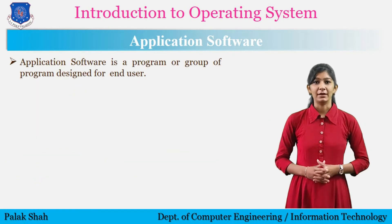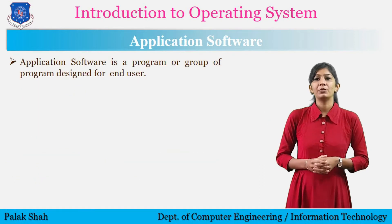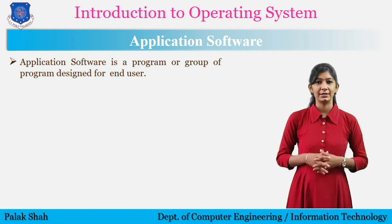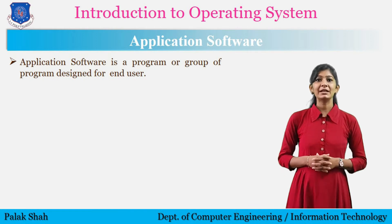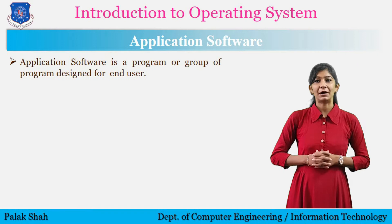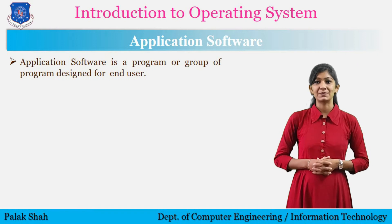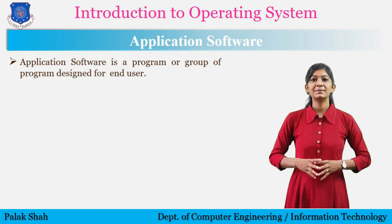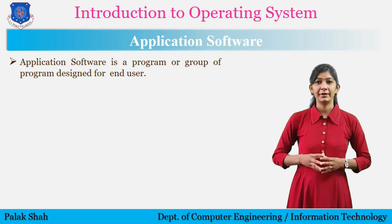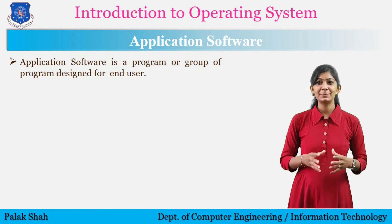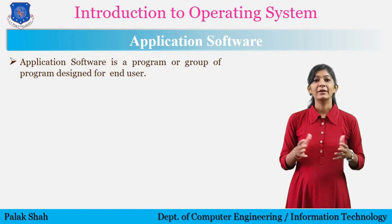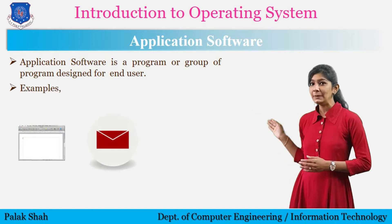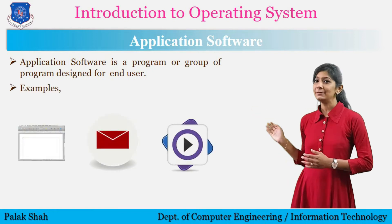Application software is a program or a group of programs designed for the end user. Application software refers to user-downloaded programs that fulfill a variety of needs. A few examples of application software are database programs, Photoshop, web browsers, word processors, email, and media players.